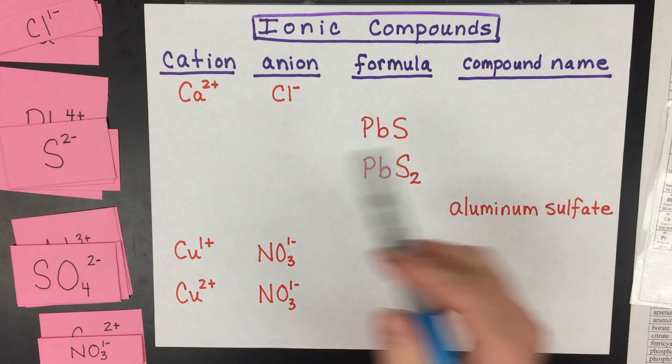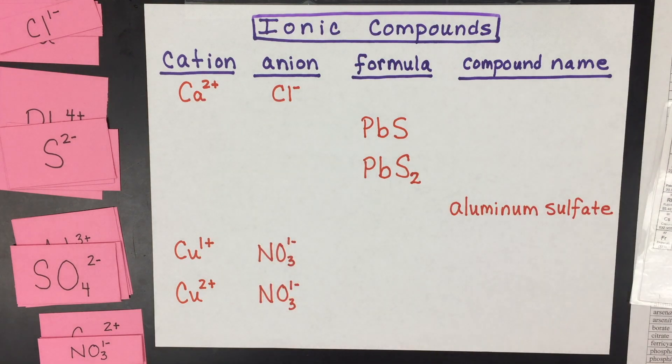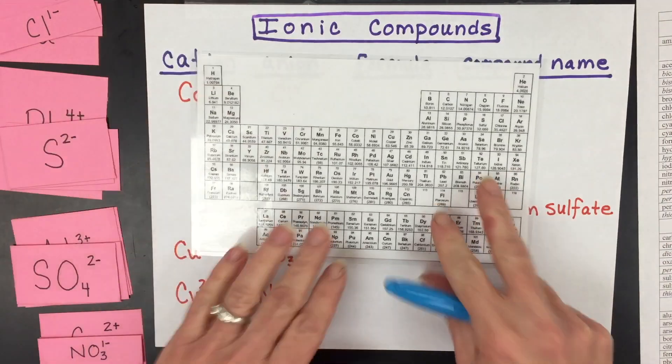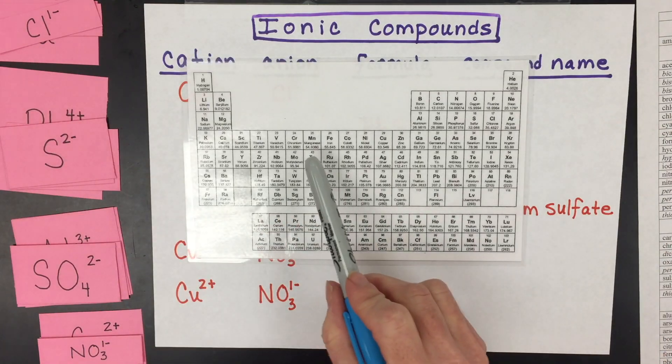For an ionic compound to exist, it has to have a cation and an anion. The cations are typically metals, not always, but typically they're metals off the periodic table, anything that is to the left of the metalloids.